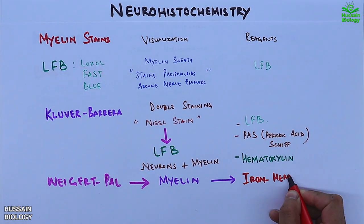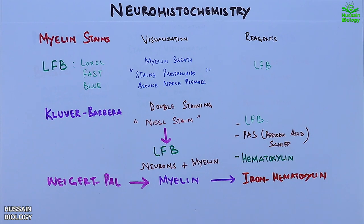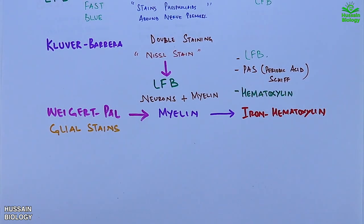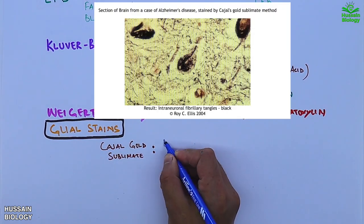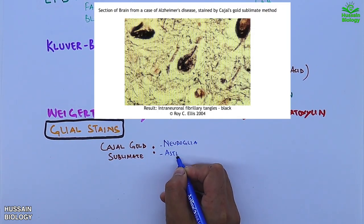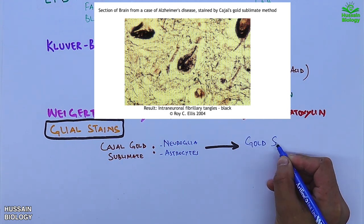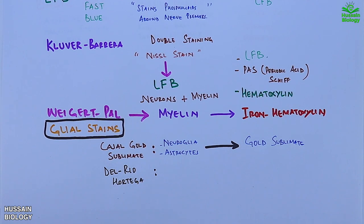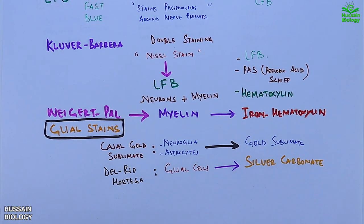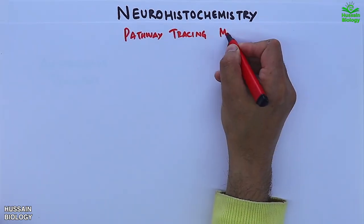Now moving forward towards the glial stains. We have the Cajal gold sublimate technique, used to stain neuroglia and astrocytes by using gold sublimate as a reagent. The second is the Del Rio Hortega method, which is used to visualize glial cells by using silver carbonate as a reagent.